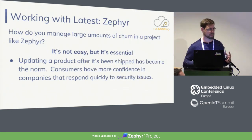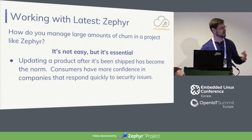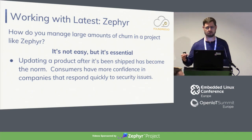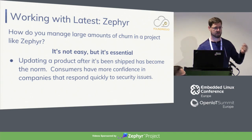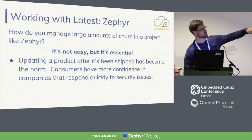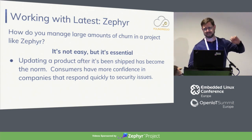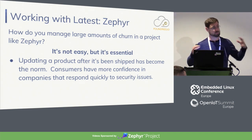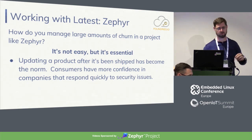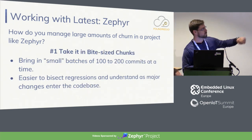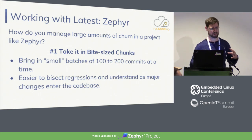I'm going to talk about how to handle that — how do you take a piece of software that has such a large amount of churn and integrate it into your workflow so you can stay a little closer to tip? It's not easy; this is not something you just roll right through. But it's worth it, and it's actually essential because, as Ricardo mentioned, we've got products in the field that need security updates. Companies' brands are dependent on being trustworthy and responding to security flaws. So number one: you can't grab 1,900 commits at a time and try to shove them into your project — it's hard to test, hard to bisect and regression test. You have to take it in small batches.